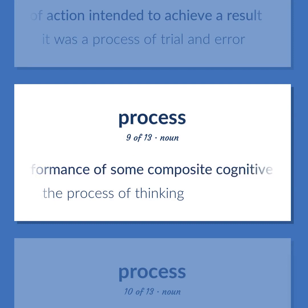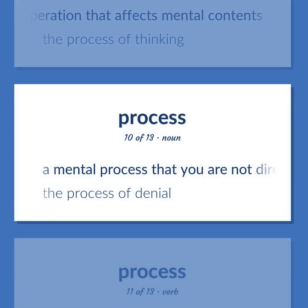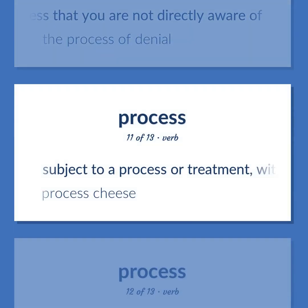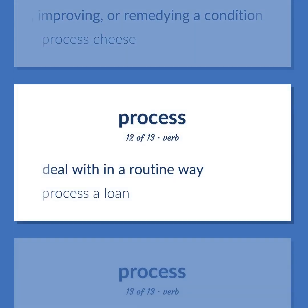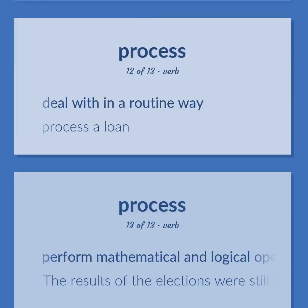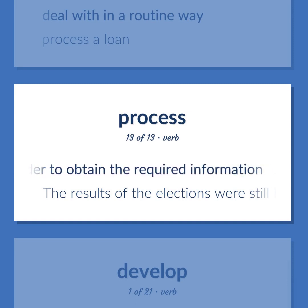Process (psychology): the performance of some composite cognitive activity; an operation that affects mental contents — 'The process of thinking.' A mental process that you are not directly aware of — 'The process of denial.' Subject to a process or treatment with the aim of readying for some purpose, improving, or remedying a condition — 'Process cheese.' Deal with in a routine way — 'Process alone.' Perform mathematical and logical operations on data according to programmed instructions in order to obtain the required information — 'The results of the elections were still being processed when he gave his acceptance speech.'